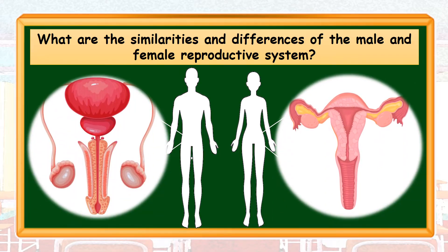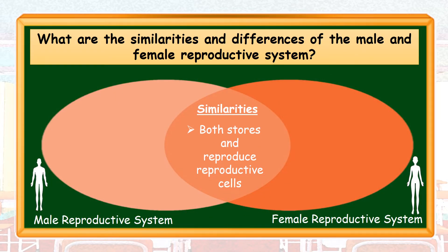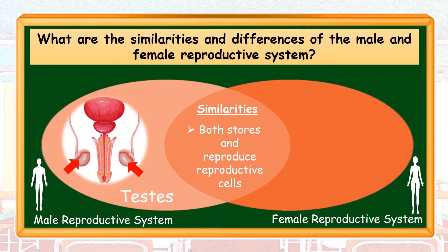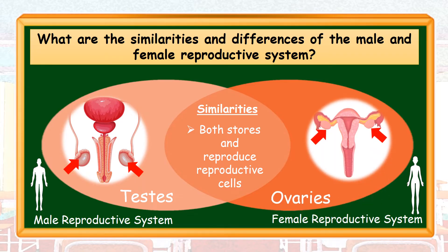This is the male and female reproductive systems. Both are located in the middle part of the lower abdomen of the body. To show the similarities and differences of these two systems, we are going to use a Venn diagram. Let's start with the organ that stores and produces reproductive cells. Both male and female can do it. For males, it is stored in the testes, while for females, it is stored in the ovaries.